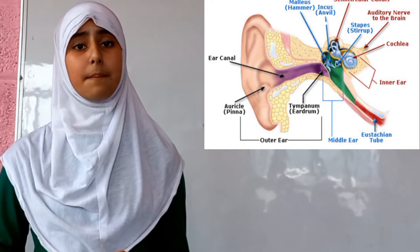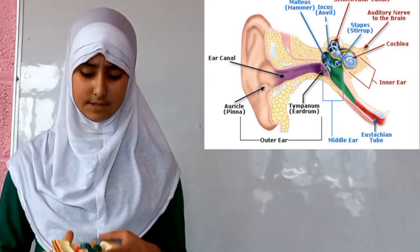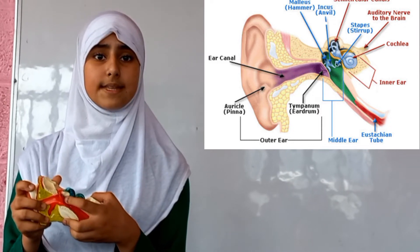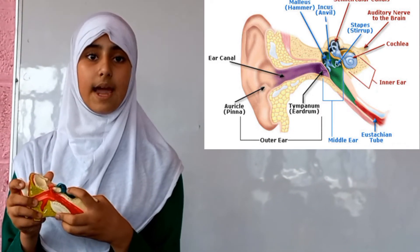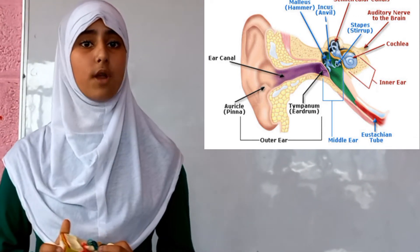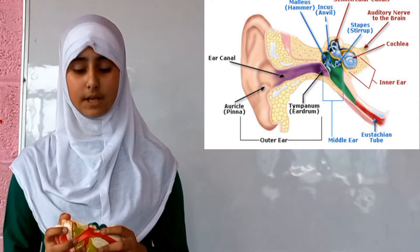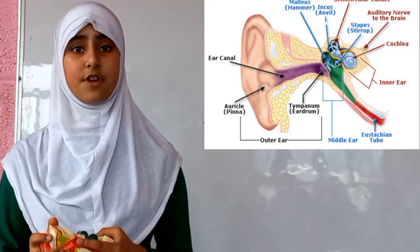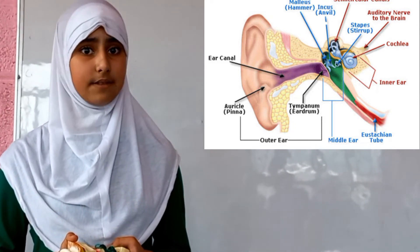Middle ear: The middle ear consists of three bones: malleus, which means the hammer; incus, which means the anvil; and stapes, which means the stirrup. Stapes is the smallest bone in our body. The vibrations of the eardrum are amplified many times by these three bones.